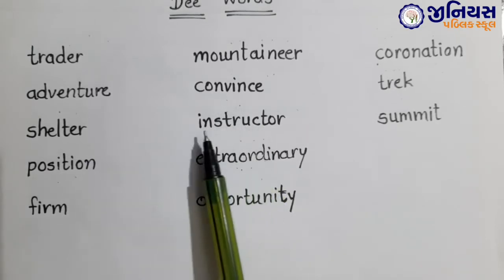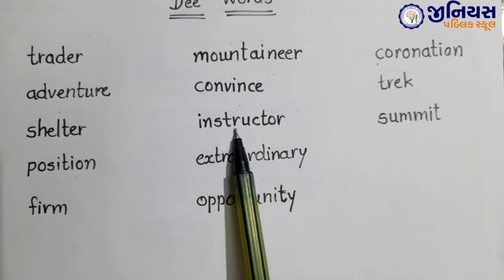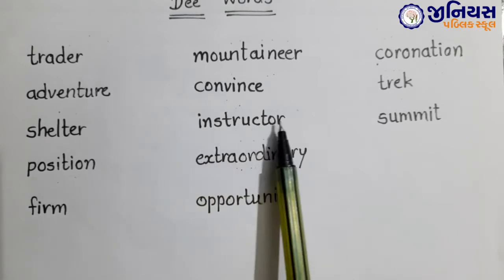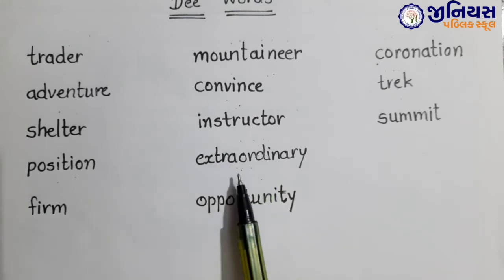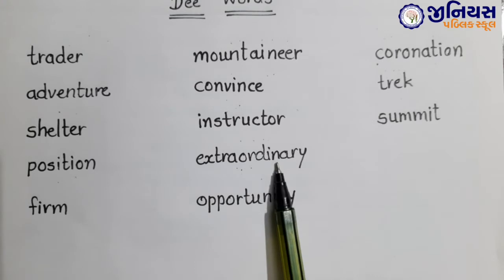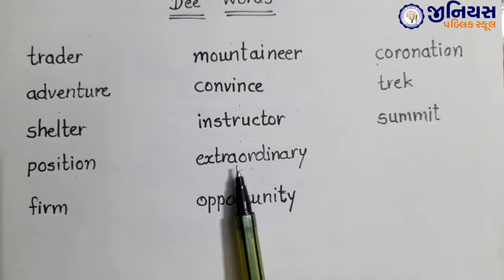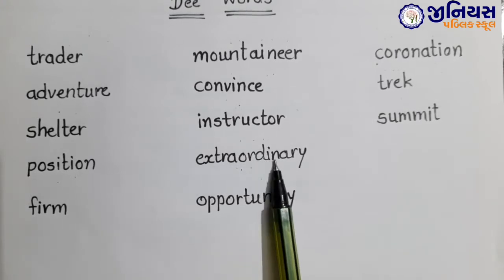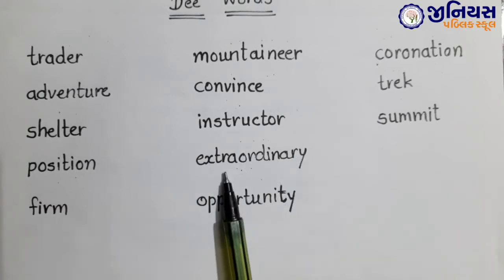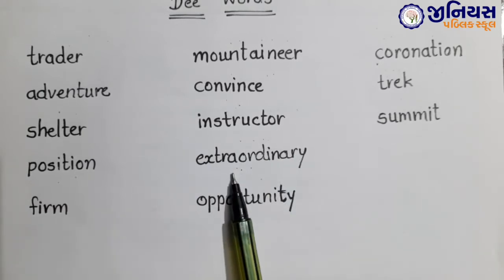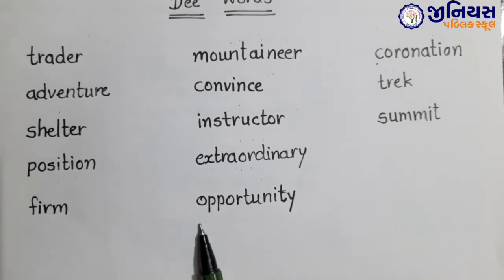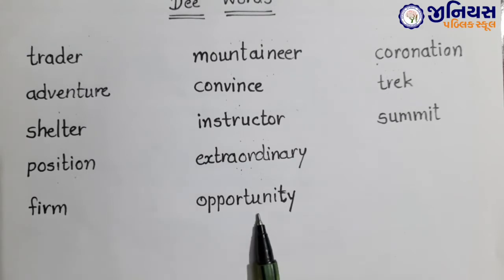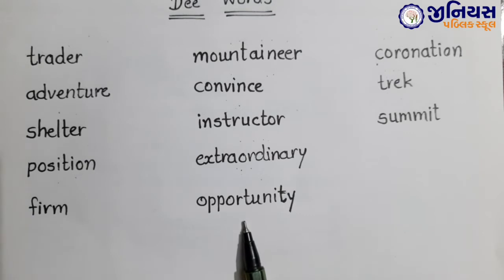Next one: instructor. I-N-S-T-R-U-C-T-O-R. Instructor. Instructor means prasikshak. Next one: extraordinary. E-X-T-R-A-O-R-D-I-N-A-R-Y. Extraordinary. Extraordinary means osadharan. Next one: opportunity. O-P-P-O-R-T-U-N-I-T-Y. Opportunity means mocha.